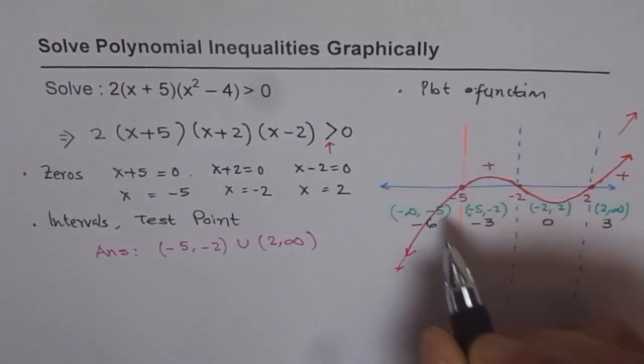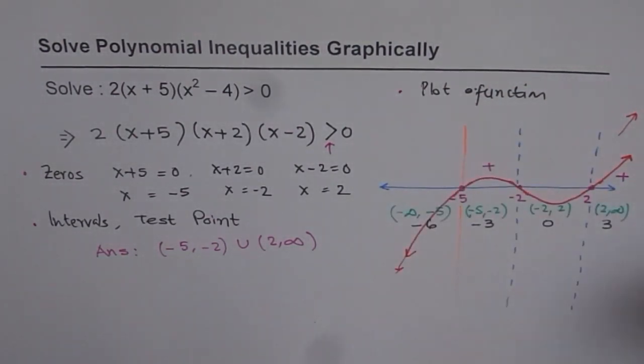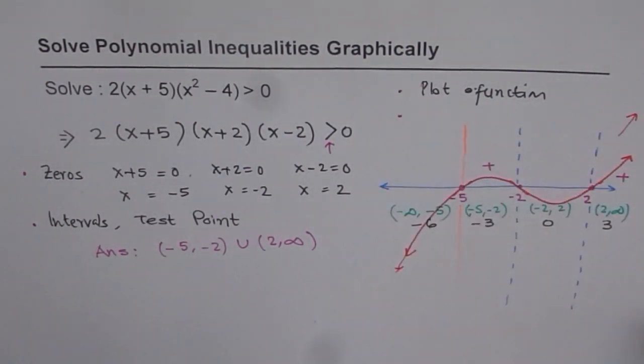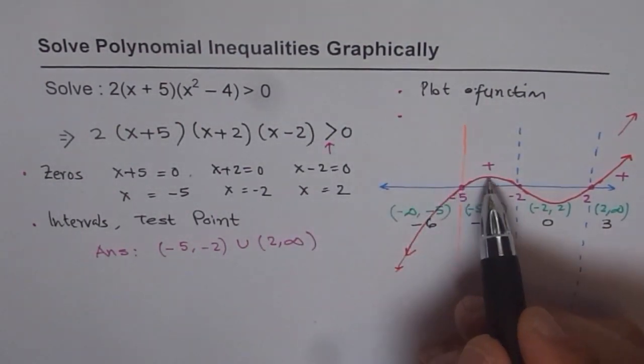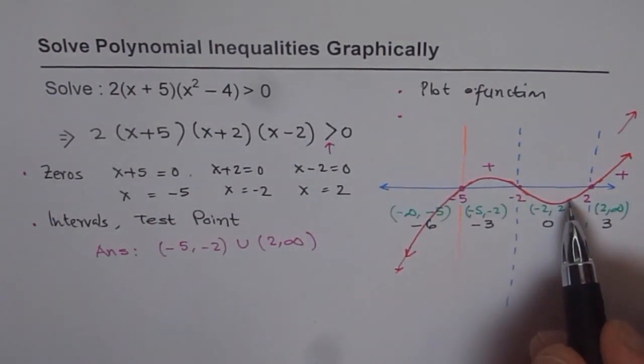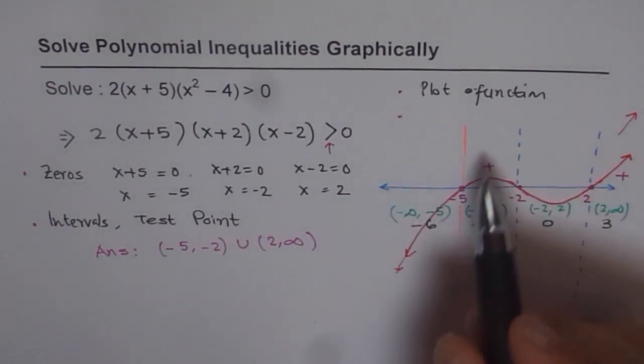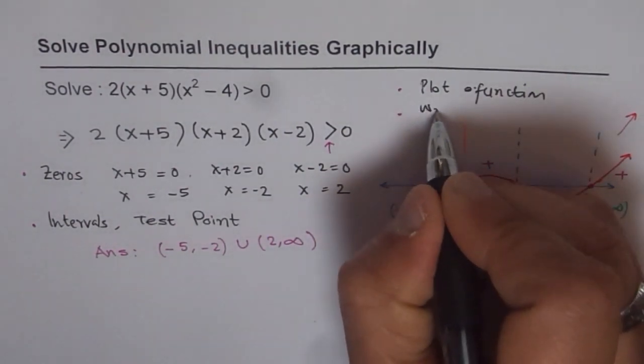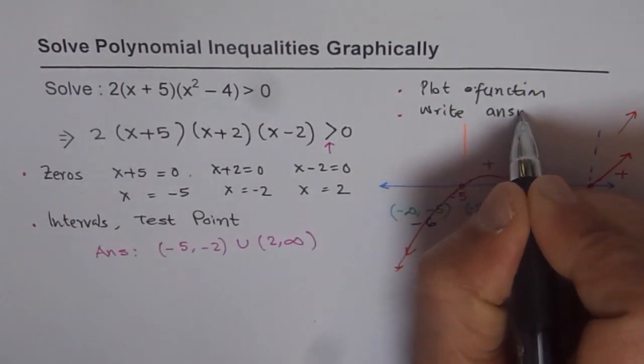So once you graph your function, you can see the result. And from there, from the graph, it is obvious. You want greater than 0, so all the points above 0, not including the zeros, is part of your solution set. Do you see that? Plot the function and write answer. That is so simple. Write your answer.